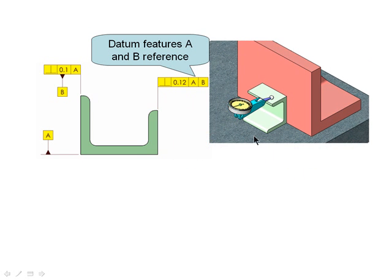I'd place the part down on the surface plate, and then I would perform my inspection. As you can see, the tolerance zone is stabilized, and I'll get reproducible results.